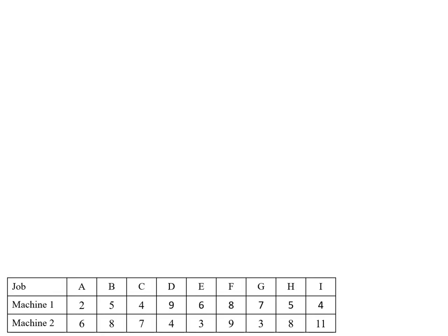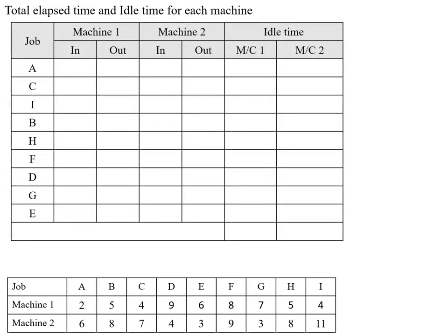The next step is to find the total elapsed time and idle time of each machine. For this, we draw a tabular column. The first two columns represent the jobs in the sequence from the optimal sequence table. The next two columns are for machine one: in-time representing waiting time to receive the respective job, and out-time representing the machining time of the respective job. The next two columns are for machine two, followed by the idle time of each machine.